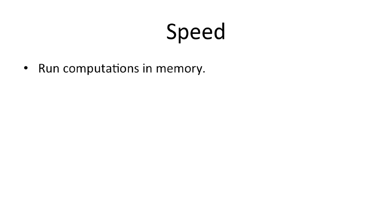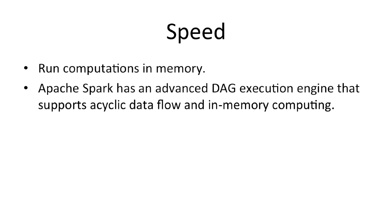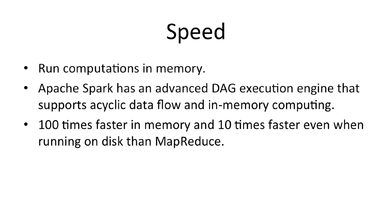Speed is a very critical aspect in processing large data sets, as it means the difference between exploring data interactively and waiting minutes or hours. One of the main advantages of Spark regarding speed is its ability to run computations in memory. Apache Spark has an advanced DAG execution engine that supports cyclic data flow and in-memory computing, enabling applications in Hadoop clusters to run up to 100 times faster in memory and 10 times faster even when running on disk.